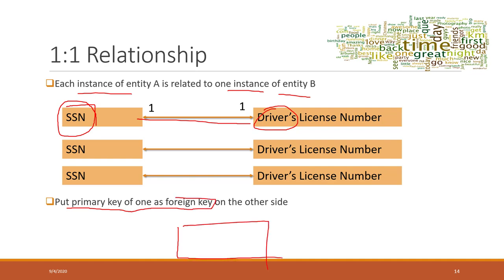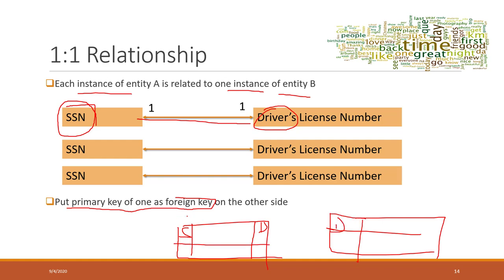To handle a one-to-one relationship, we put the primary key of one table as a foreign key on the other side. For example, on the SSN table the SSN is the primary key, and on the SSN table the driver's license number will be a foreign key which refers to the primary key on the drivers table. That is the one-to-one relationship.